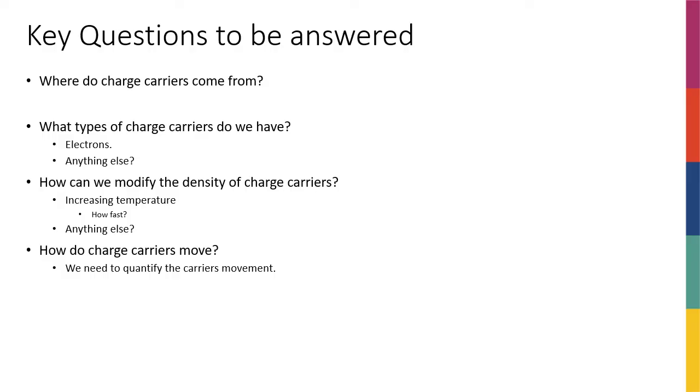And the last one is that, how do charge carriers move? So I know that electrons move if I apply voltage across them, but is there any other kind of mechanism that results in any kind of electron movement or any other kind of charge carrier movement? And then I need to quantify this movement, how fast these movements are going to happen, because charge movements means current, and I need to actually calculate current, and I need to know what is the voltage current relationship in these semiconductor devices or semiconductor material in general.